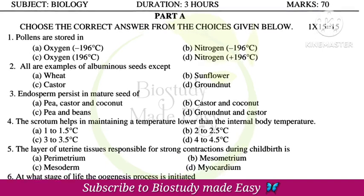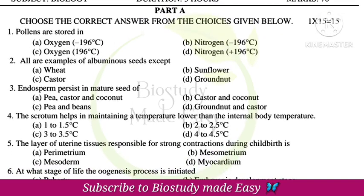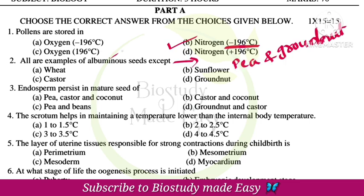I will cover 70 marks. In Part A: pollens are stored in liquid nitrogen — that is cold preservation. Nitrogen is at minus 196 degrees Celsius, so cold temperature. For albuminous seeds, all are examples except the non-albuminous ones, which go to the endosperm.